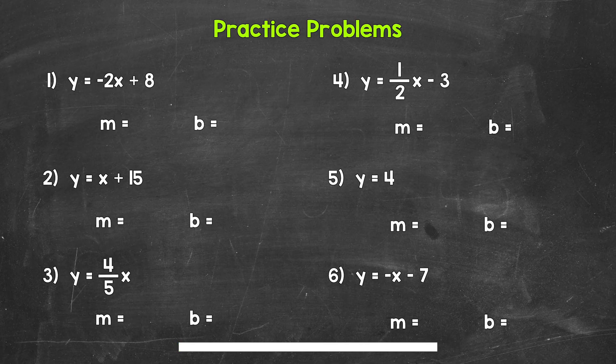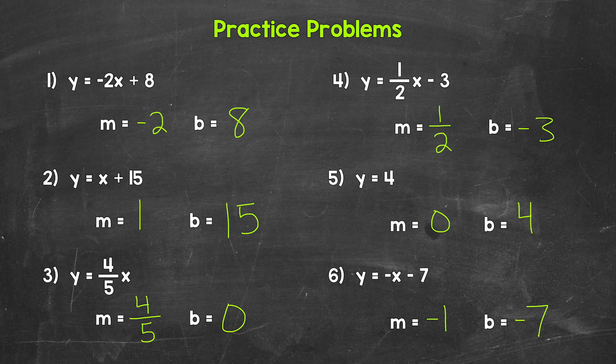Okay, so that was three minutes. Let's go over the answers. For number one, the slope is negative 2 and the y-intercept is 8. For number two, the slope is 1 and the y-intercept is 15.